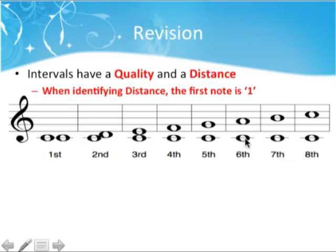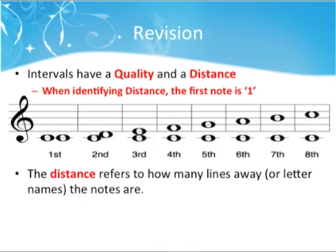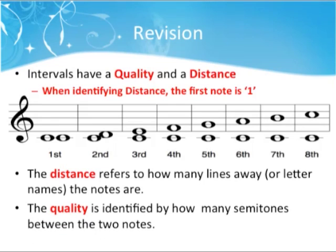From C to A is a 6 — that's 1, 2, 3, 4, 5, 6 — just counting every single note there and we get a distance. Distance refers to how many letter names the notes are apart. The quality refers to how many semitones are between the two notes.